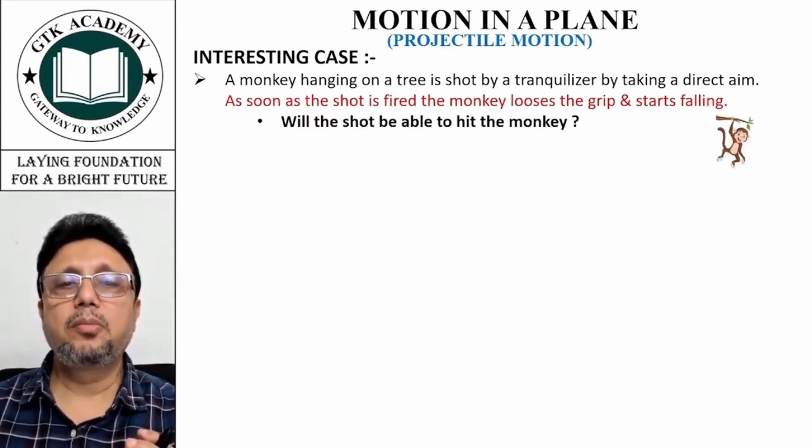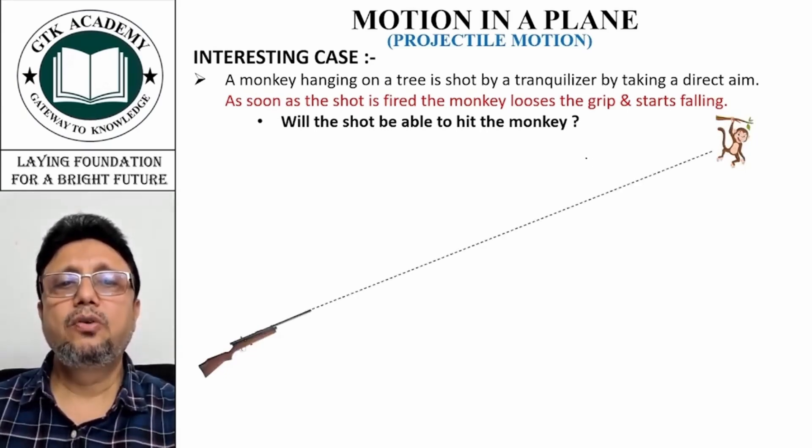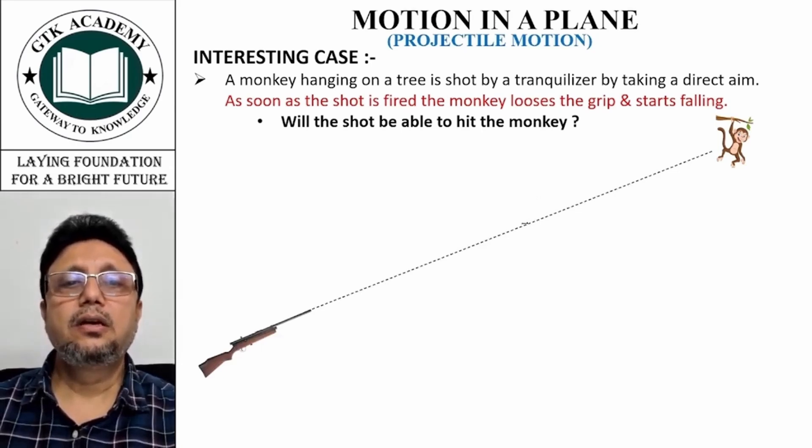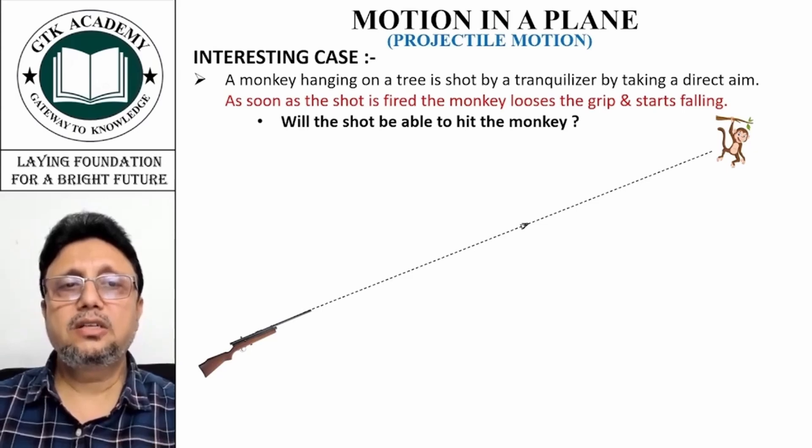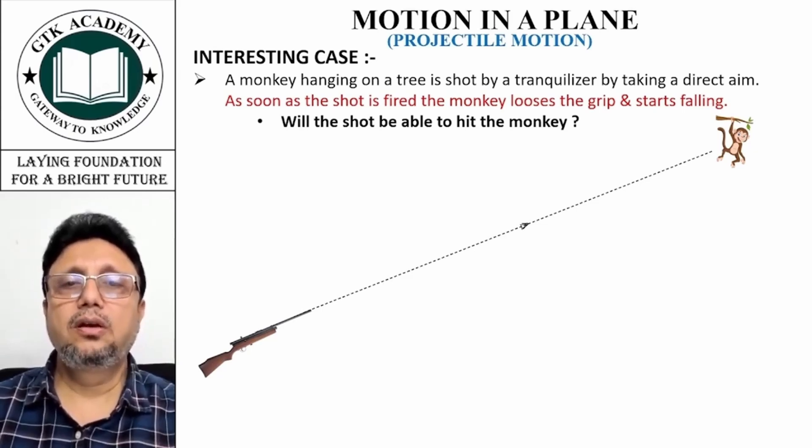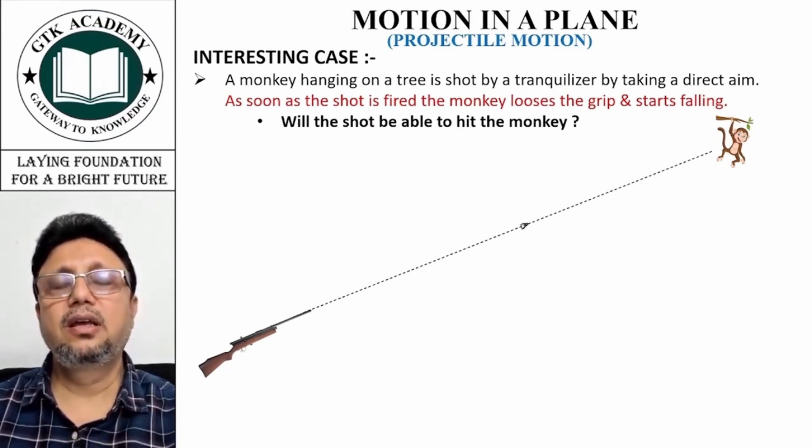The question is whether the shot will be able to hit the monkey or not. Let's visualize the problem: this is a monkey and this is your gun, and you take a direct aim. What happens as soon as you fire this shot? Because of the sound, this fellow starts falling down. Will the shot be able to hit the monkey? That's the question here.